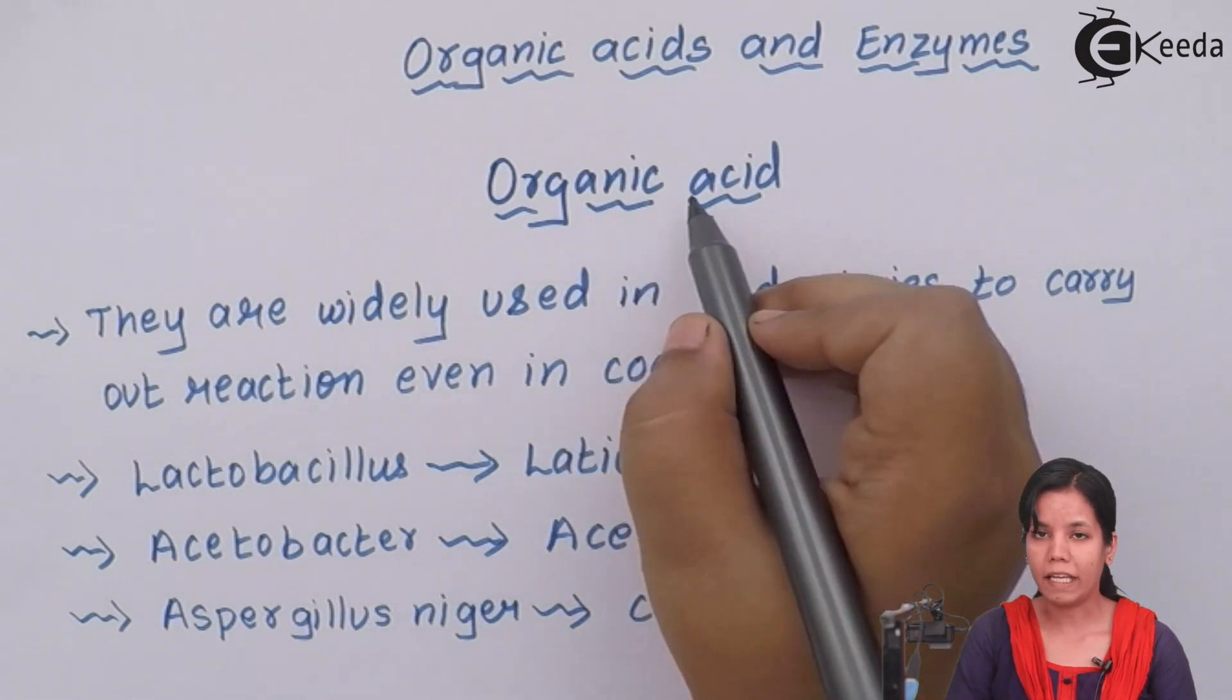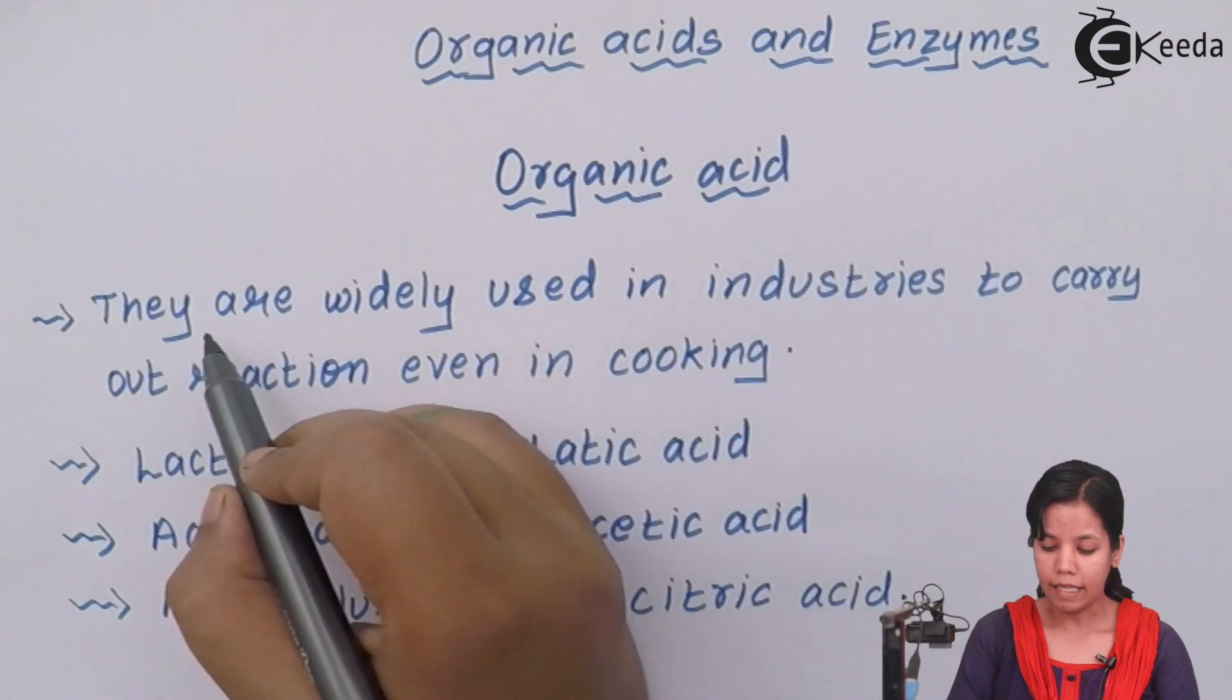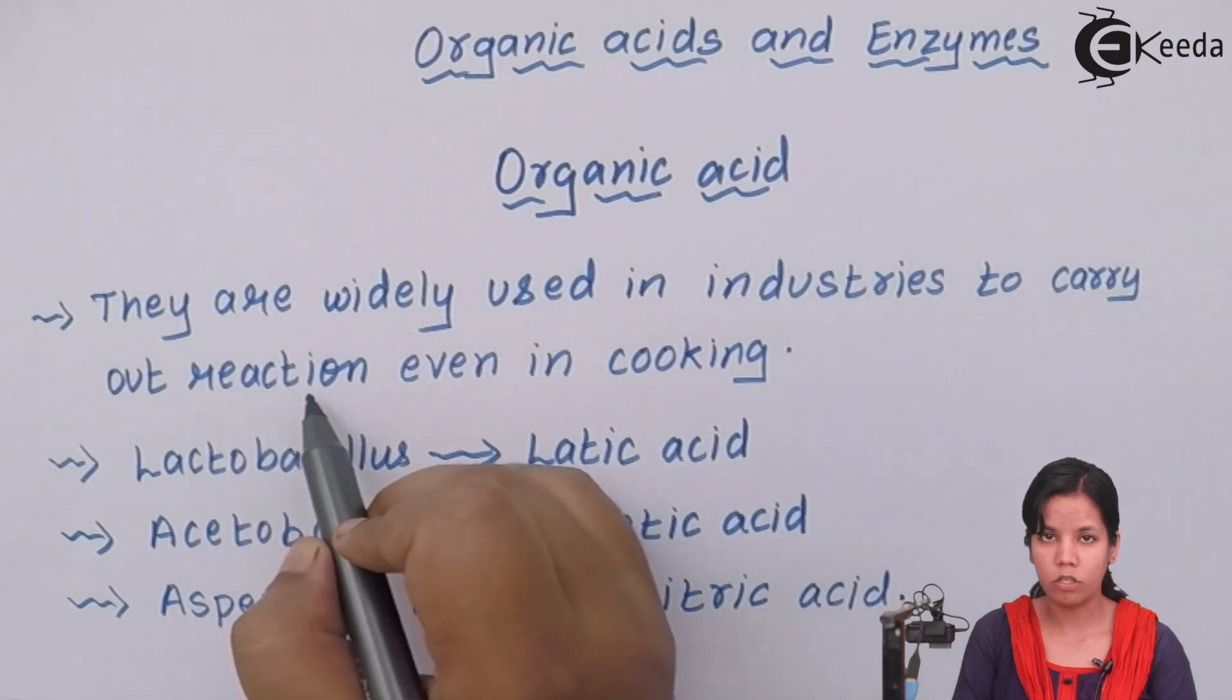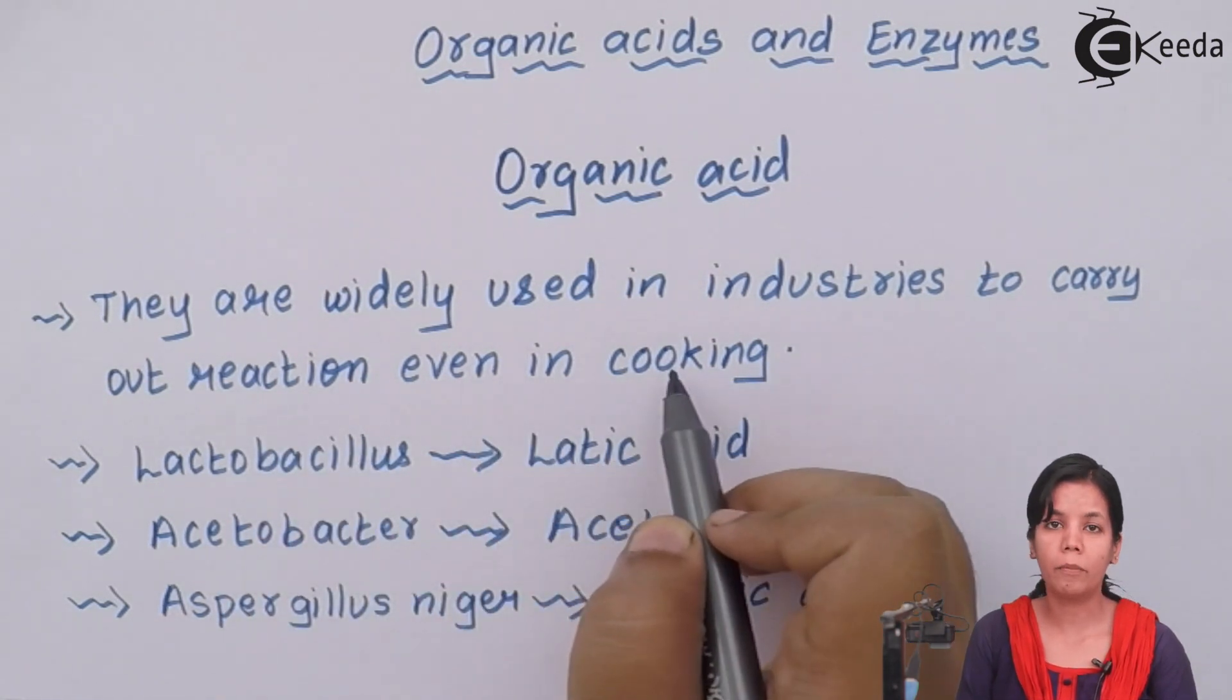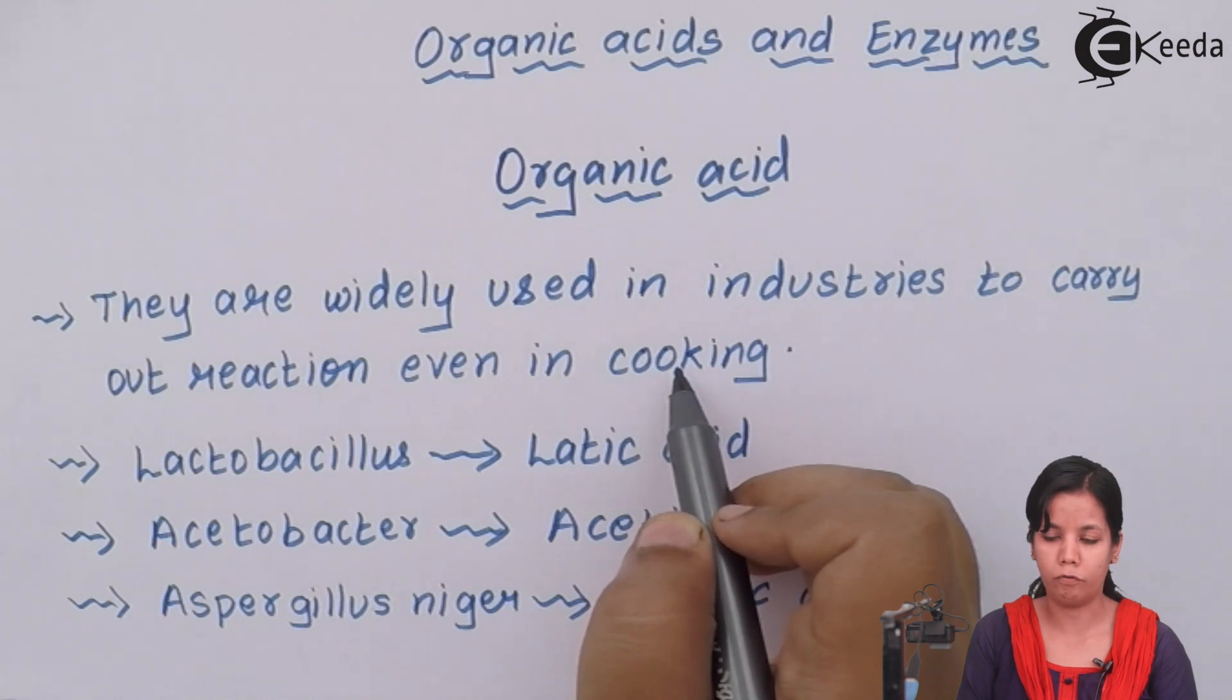We were studying about organic acids or acids which are made into industries. These organic acids are widely used in industries to carry out reactions for the formation of certain products. Even in cooking, in cooking products like Chinese and all the continental food products use certain organic acids like citric acid, vinegar and all of those.